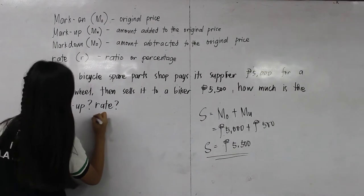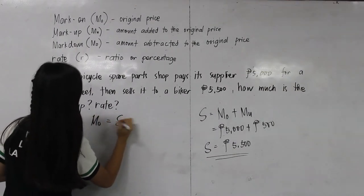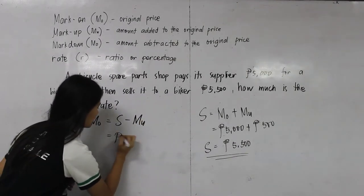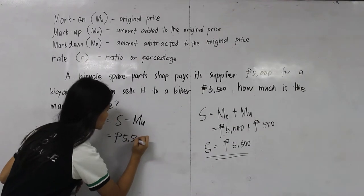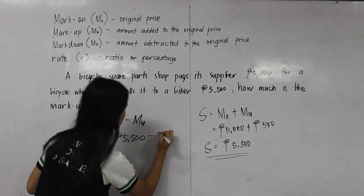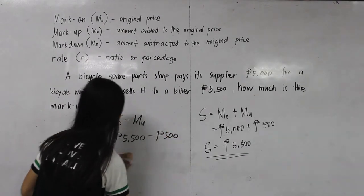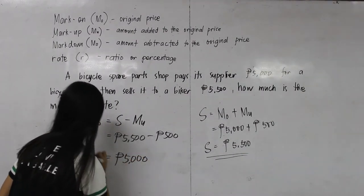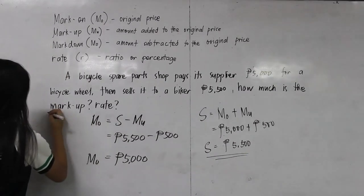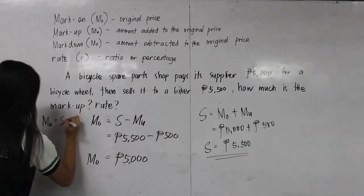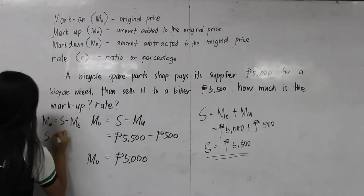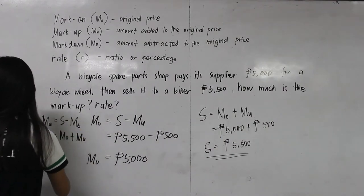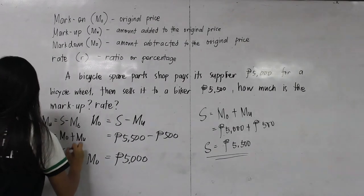Next, what if in this problem the original price is not given, but selling price and markup are given? Selling price is 5,500 pesos minus our markup of 500 pesos, so our original price would be 5,000 pesos. The formula for markup is selling price minus original price. For selling price: original price plus markup. And for original price: selling price minus markup.